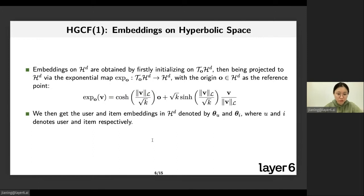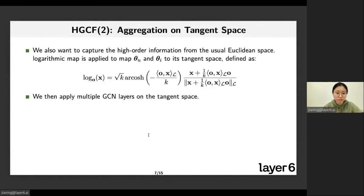Now I will present our HGCF model. Firstly, how we define embeddings on hyperbolic space. They are firstly obtained by initializing on the tangent space with respect to the origin of the hyperbolic space. And an exponential map is defined in Riemannian manifolds, which allows us to project from tangent space to hyperbolic space. We then get the user and item embeddings in hyperbolic space denoted by θ_u and θ_i with the help of exponential mapping. And here u and i denote users and items respectively.